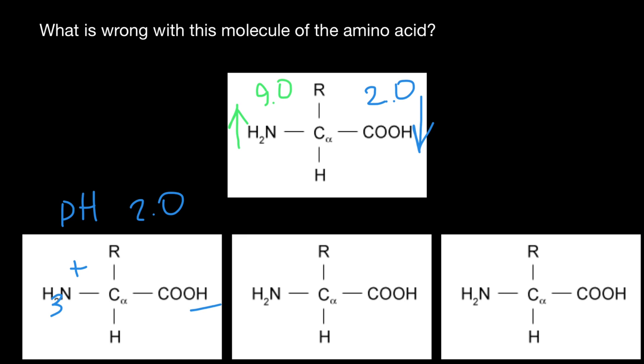And let's say we have neutral solution, which is pH 7.0. What in this case we are going to have is we're still going to have this group protonated, so H3 here, but this hydrogen is going to be lost because this pH is above 2.0.